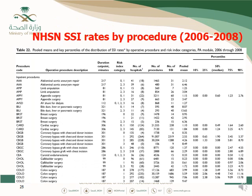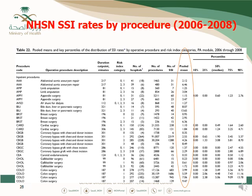Looking at the SSI rate table, on the far left you see the procedure code, then the procedure full name, the cut-point duration for the procedure, the risk index category, the number of hospitals contributing data, the number of procedures reviewed for SSI, and the number of SSI events for each type of surgery and risk index category. When data exceed 20 data points, the percentile is also described, similar to the device-associated data. The bold mean is used for SSI rate by risk index category.